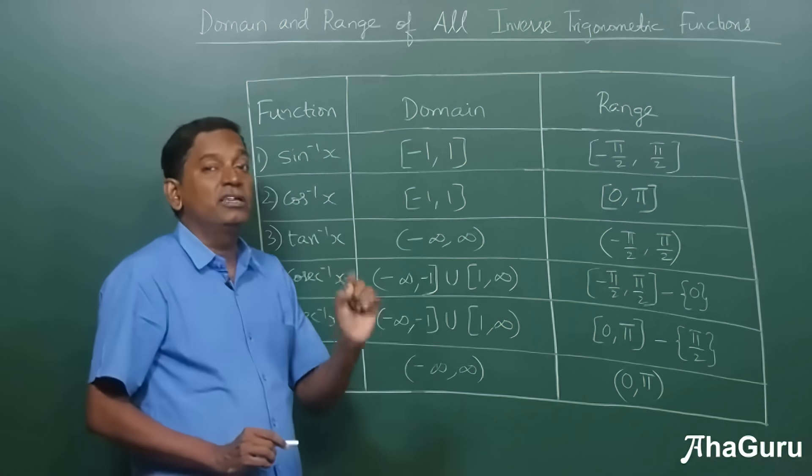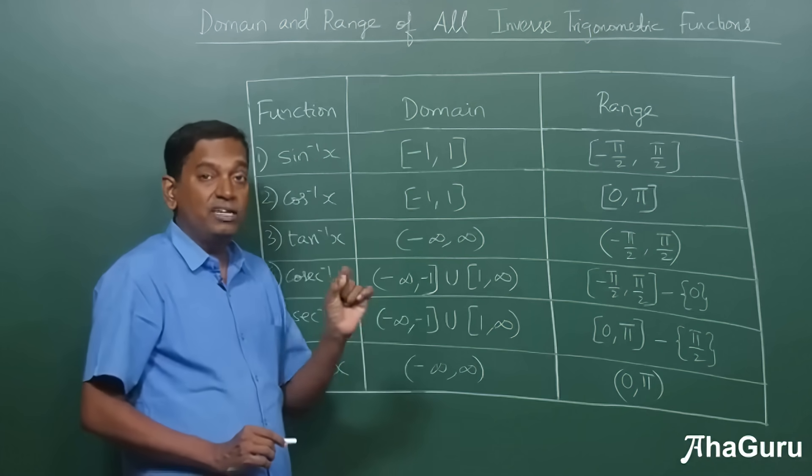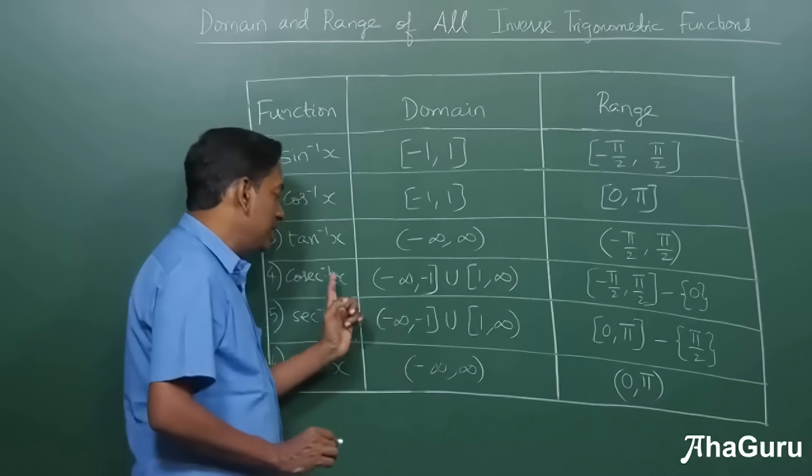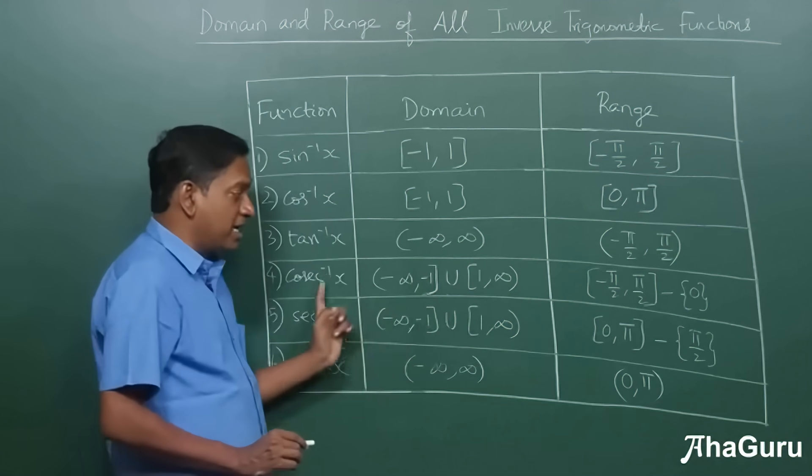For example, you can't define cosecant inverse of half or cosecant inverse of minus two by three because they lie between minus one and one and that's not part of the domain of the cosecant inverse function.